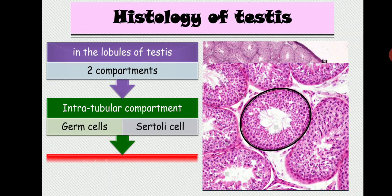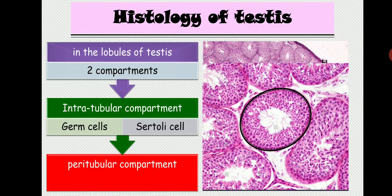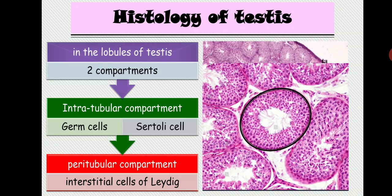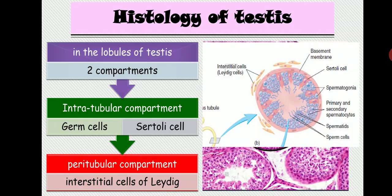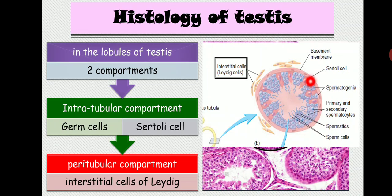Inside the peritubular compartment, situated between the tubules, there is the interstitial cell of Leydig. Inside the tubular compartment, the blue-colored portions are the germ cells — spermatogonia, primary spermatocyte, secondary spermatocyte, spermatid, and finally the sperm cell. The large pink-colored cells are the Sertoli cells. So inside the tubular compartment there are two types of cells: Sertoli cells and germ cells. Just outside the tubular compartment in the peritubular compartment are the interstitial cells of Leydig.